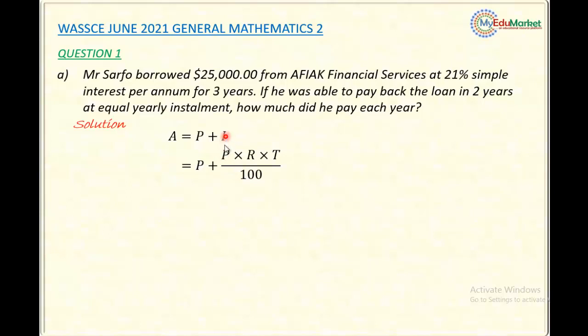So I replace the I by P times R times T all over 100. I now substitute these values from the formula. I now have P, which is the original money borrowed, $25,000, and my R is the rate of interest, which is 21%. The time is 3 years.